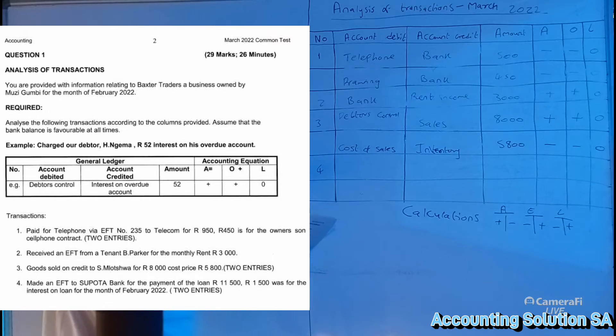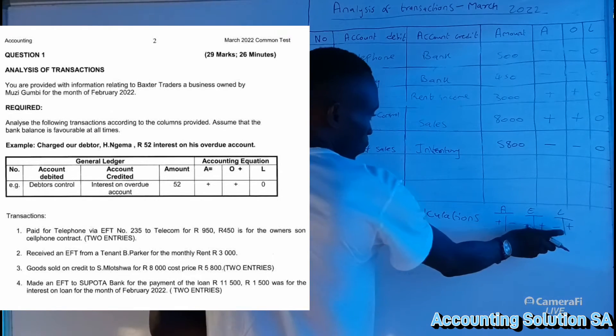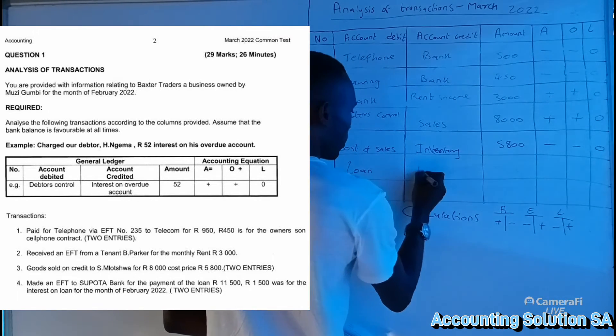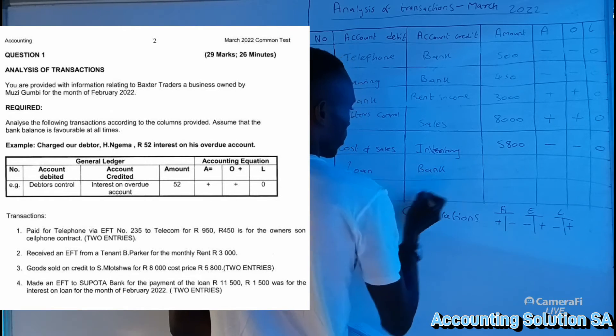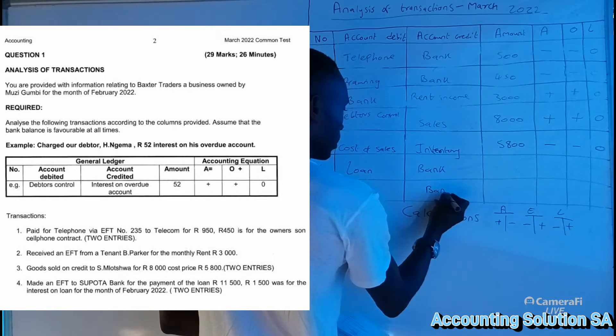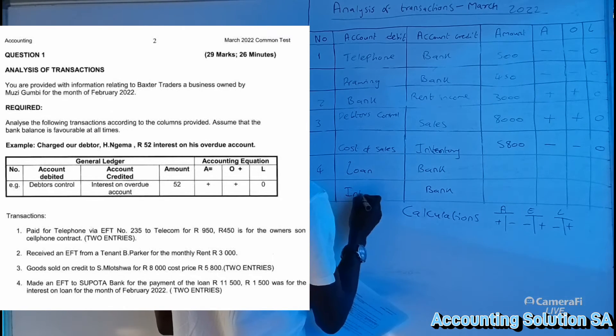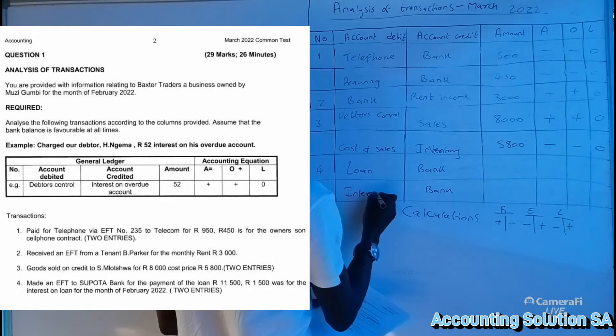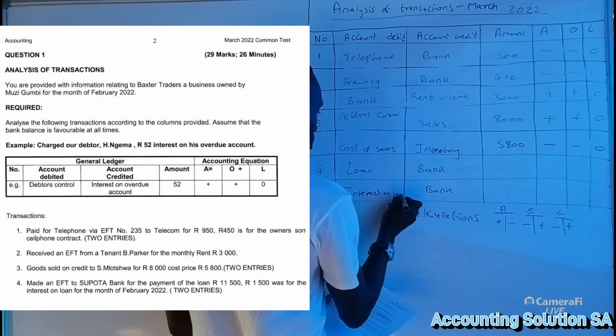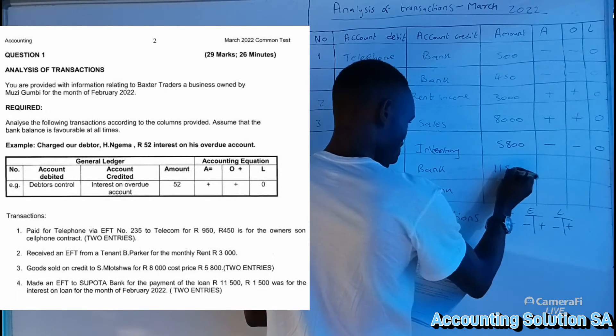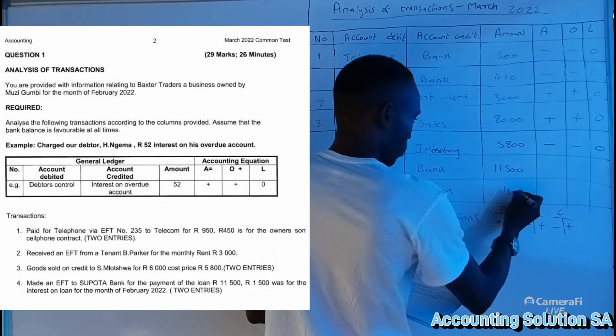We pay a loan of 11,000, which means that we reduce liability. A loan must come this side to indicate that we will reduce liability and bank. And we also have paid the other 1,500 for interest, interest on loan.